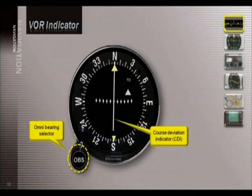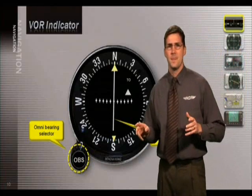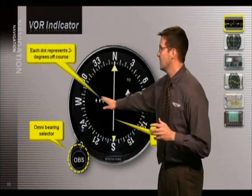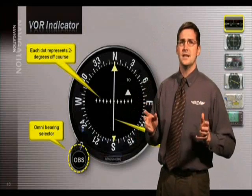It indicates the displacement of the aircraft relative to the selected Omni Bearing. If the CDI needle moves to the left, you're to the right of your desired course and you would fly left to intercept it. Each dot on the needle represents two degrees. When the needle is centered, you're directly on the selected course.